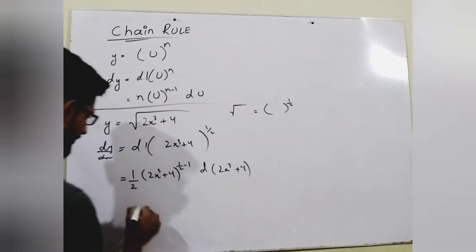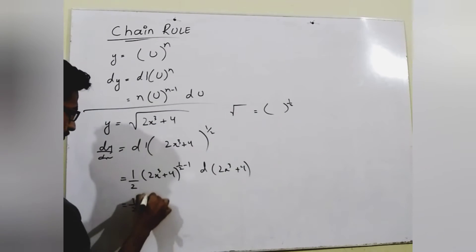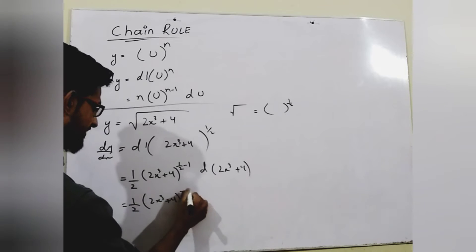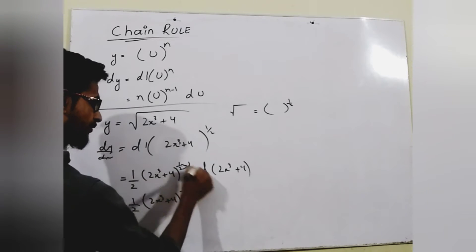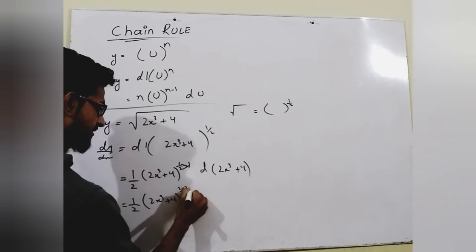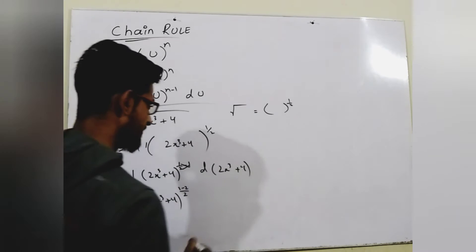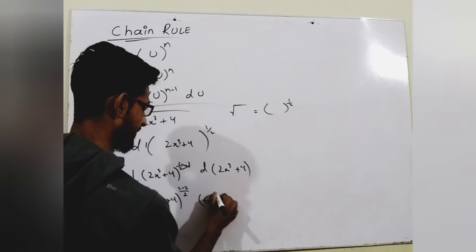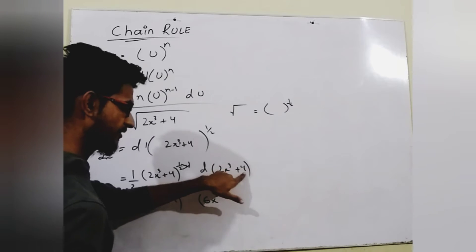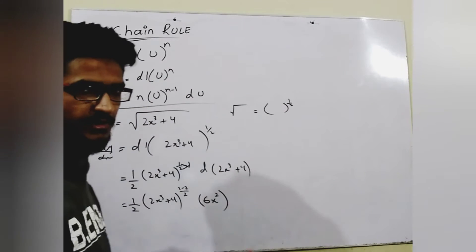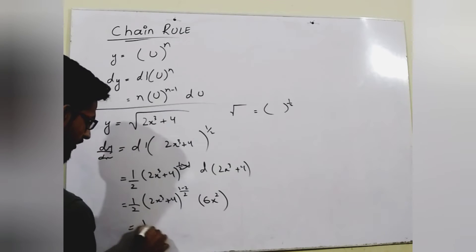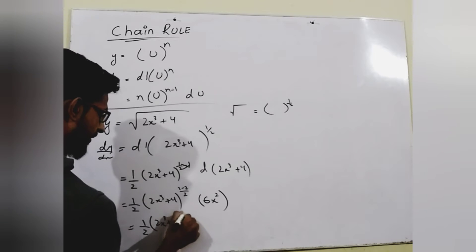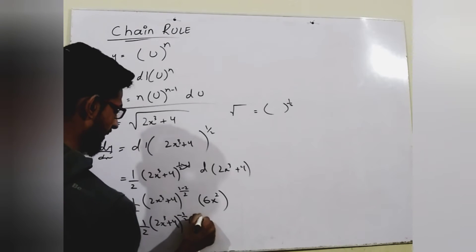Now we have 1/2 times (2x³ + 4) to the power (1/2 − 1). Taking the LCM of 2, we cross multiply to get 1 − 2, giving the power −1/2. The derivative of (2x³ + 4) is 6x² (since the derivative of 4, a constant, equals 0). So we now have 1/2 times (2x³ + 4) to the power −1/2, times 6x².